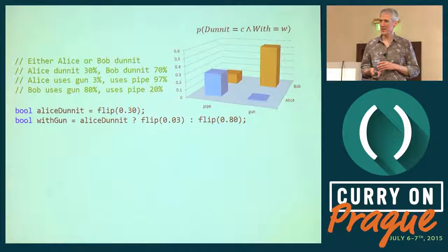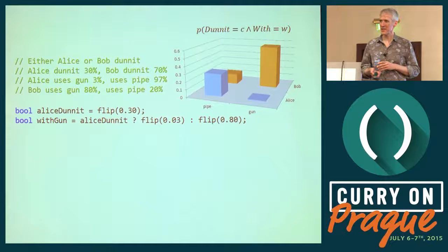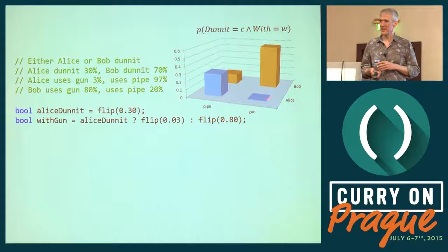The simple way to understand how we define a probability distribution by a bit of code is to think about running the program many times and counting up the different possibilities — this is called sampling. Running this program many times gives you the distribution of the four possible outcomes. It's most likely that Bob uses the gun, then less likely Bob using a pipe, about 30% chance it's Alice using the pipe, and very unlikely Alice using the gun. That's the prior situation.